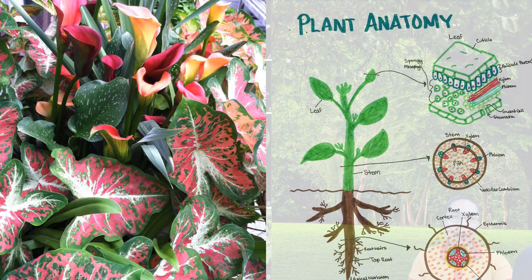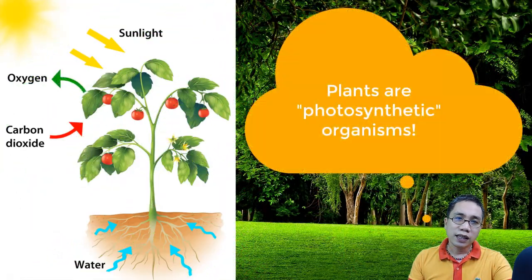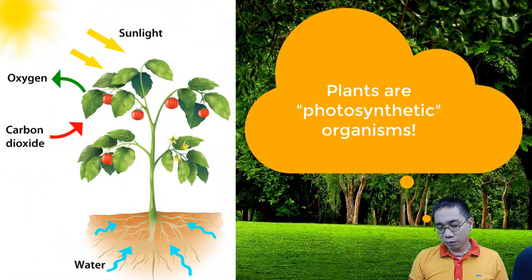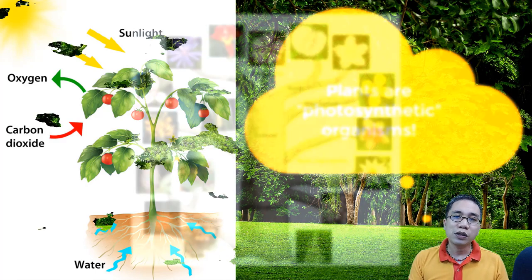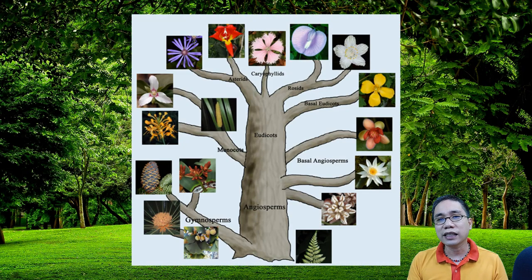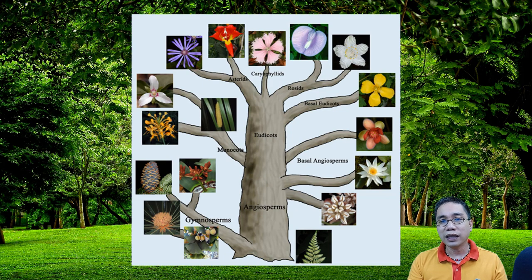Now, we usually define plants as organisms that can photosynthesize. But again, in this subject, we will go beyond that. We will look at the evolutionary history of plants and how the relatedness of various plant groups can be useful in defining the plant in general.